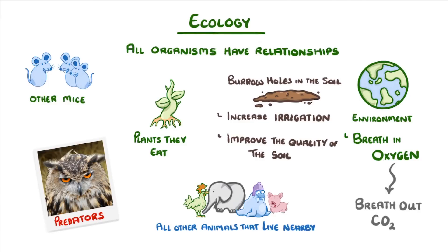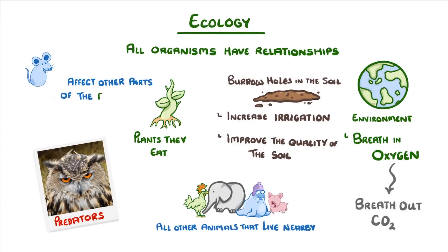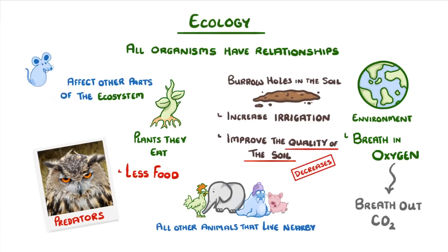Because of all these relationships, if any one part of the ecosystem changes — for example, the mouse population falls — it can affect all other parts of the ecosystem. So in this case, it could mean that predators have less food and soil quality decreases.